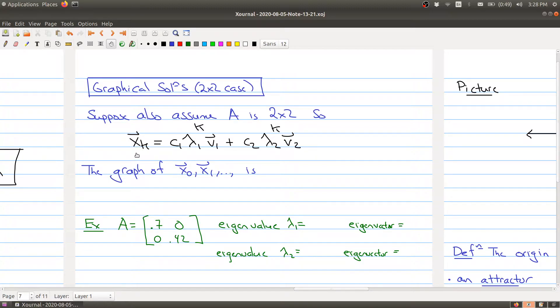So what we have is any value, the kth term in our sequence can be written in terms of just two terms because we're only going to have two eigenvalues and two eigenvectors.